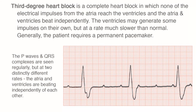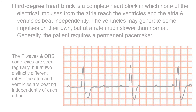Third degree heart block is a complete heart block in which none of the electrical impulses from the atria reach the ventricles, and the atria and ventricles beat independently. The ventricles may generate some impulses on their own, but at a rate much slower than normal. Generally, the patient requires a permanent pacemaker.